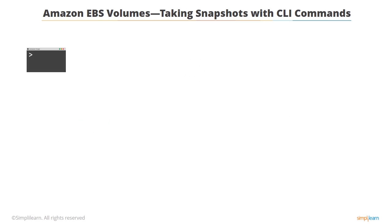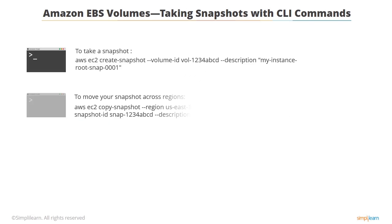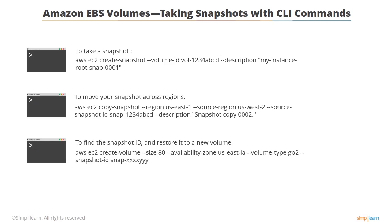On this screen, CLI commands for three common snapshot management operations are displayed: taking the snapshot, moving the snapshot across regions, and finding the snapshot ID and restoring it to a new volume. The AWS CLI commands are self-explanatory. Note that it is always useful to pass a description for the newly created snapshot.